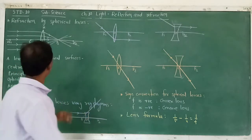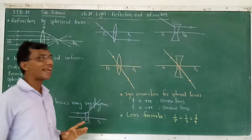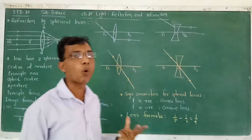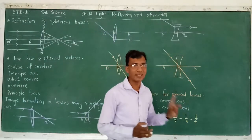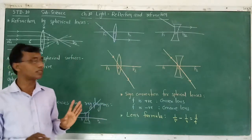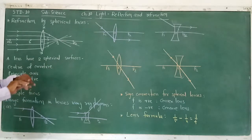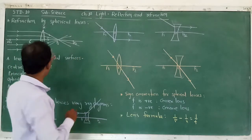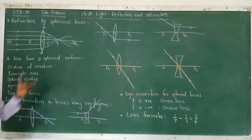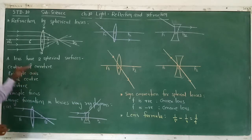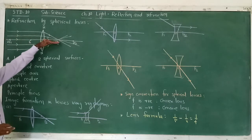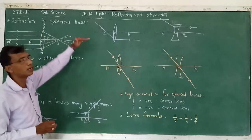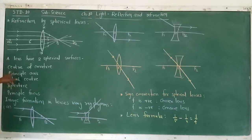The next topic is refraction by spherical lenses. A lens is made from two surfaces. There are two types of lenses: concave lens and convex lens. A lens has two spherical surfaces made from parts of a sphere. The center of the sphere is known as the center of curvature. The imaginary line passing through the center of curvature is known as the principal axis.